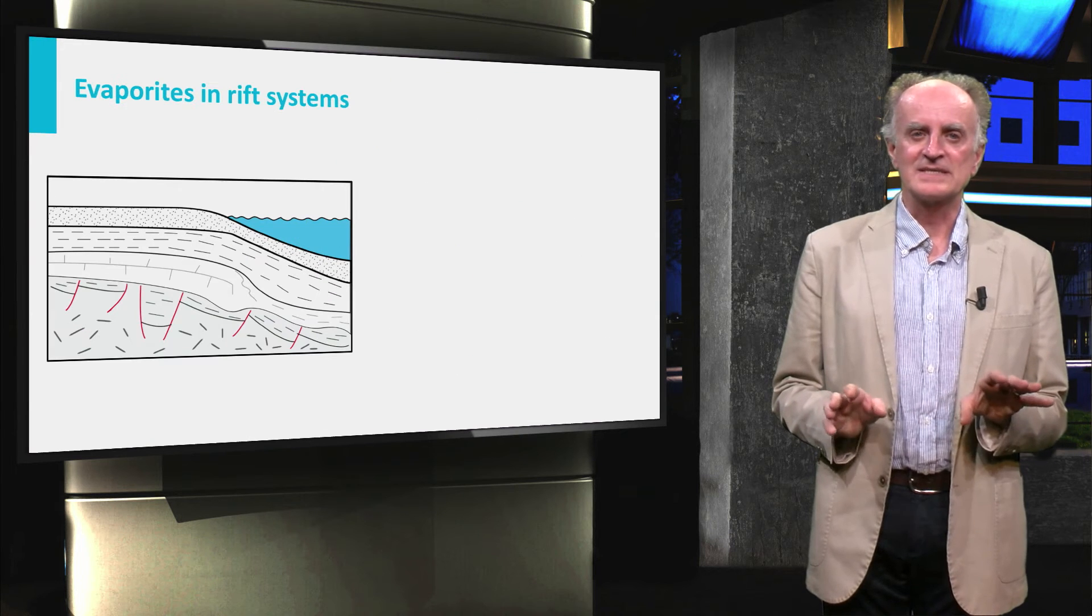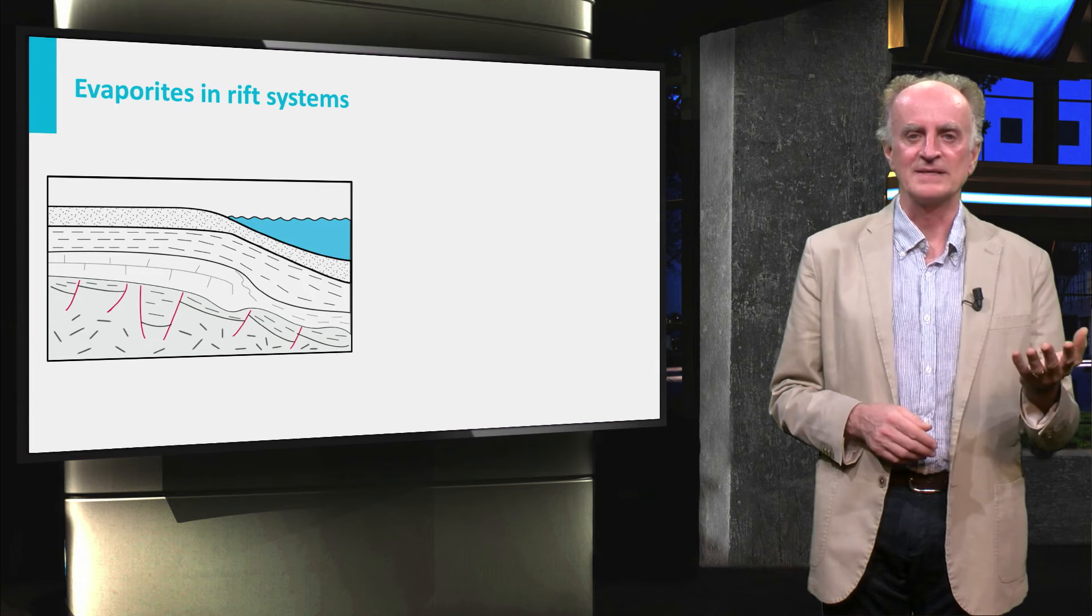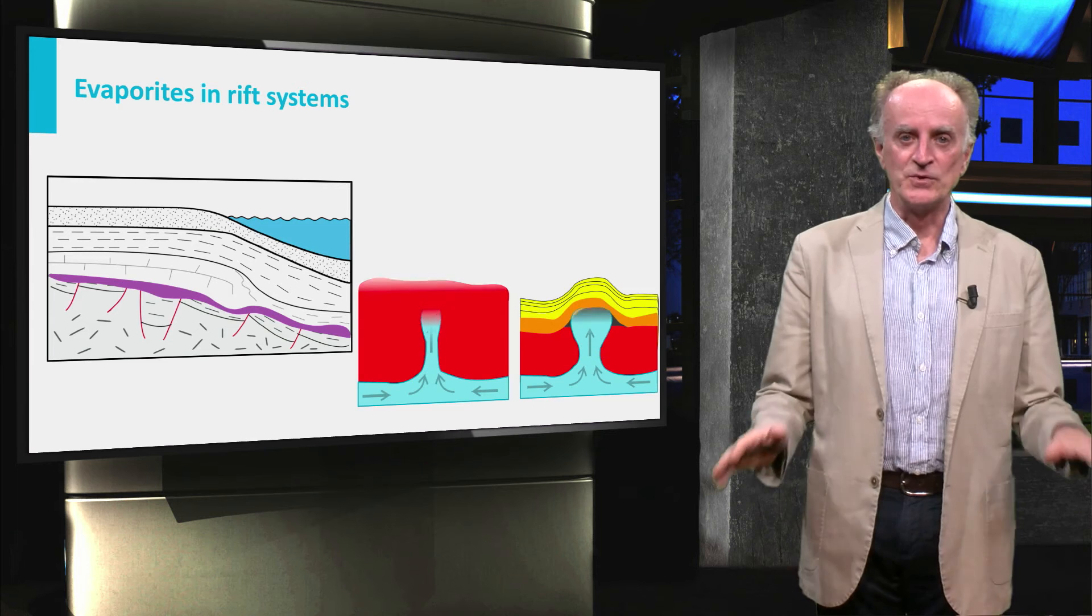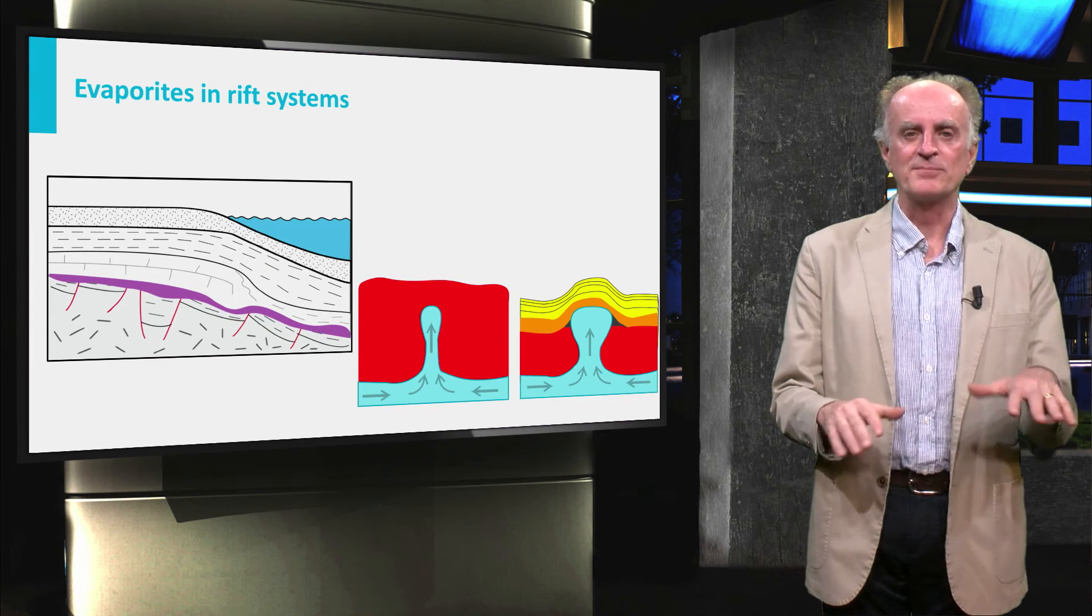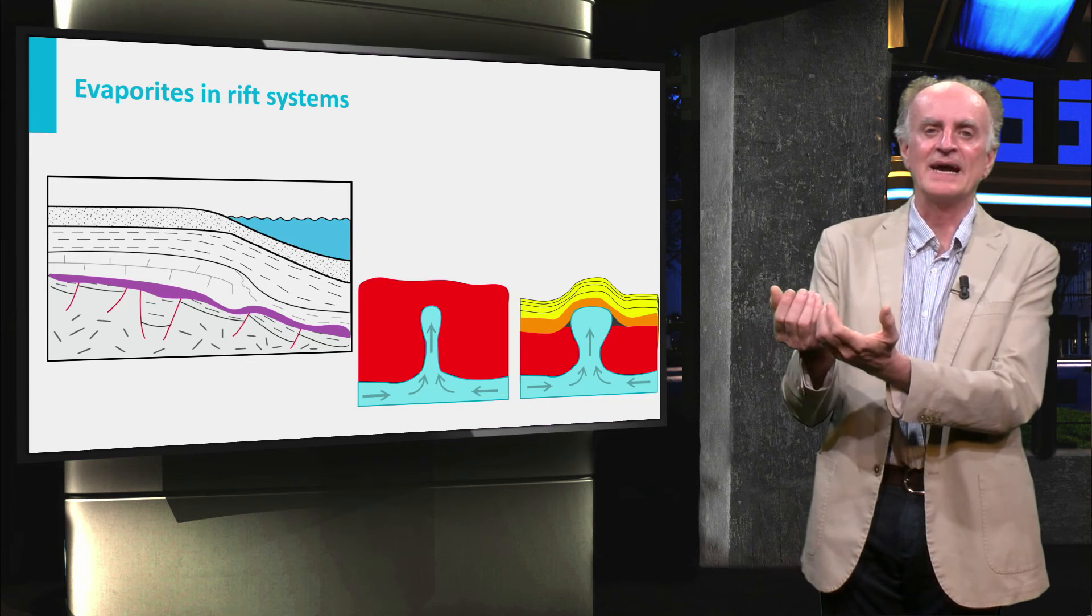Various extensional systems are characterized by the presence of thick succession of evaporites, typically deposited in the early post-rift stages. During post-rift deepening, the evaporites become mobile and start forming huge columnar bodies kilometers high.